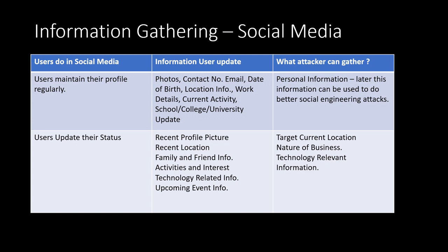Generally, users maintain their profiles regularly — changing profile pictures, maintaining privacy settings, and updating passwords. What a user typically updates on social media includes photos, contact details, email addresses, date of birth, location info, work details, school or college or university information, company details, and current activity updates — such as interest in a concert or event. Users also update their school, college, and university information.